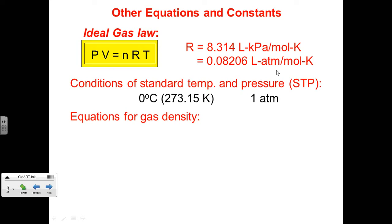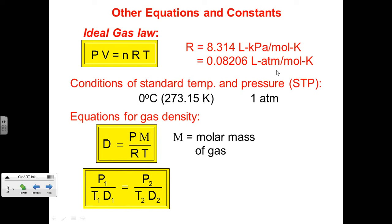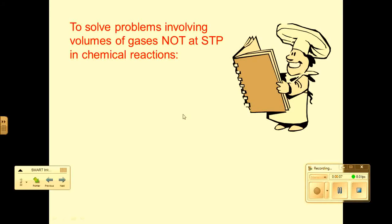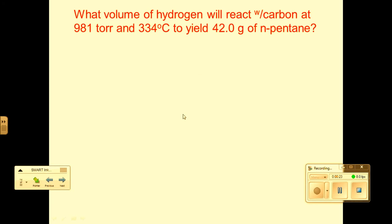Adding to this are equations for gas density, which combine density with gas laws. Density essentially equals pressure times molar mass over the gas constant R times temperature T. To extend this to the combined gas law, you have the same set of conditions, but you replace volume with density and redirect the equation. Solving problems involving volumes of gases not at STP will require use of PV = nRT and stoichiometry.